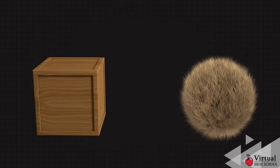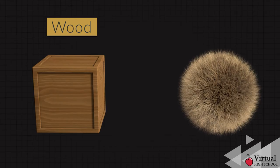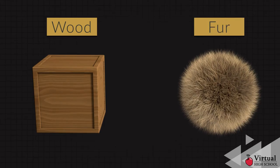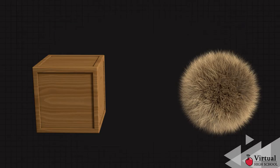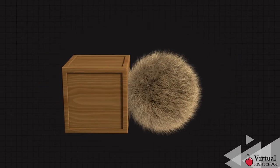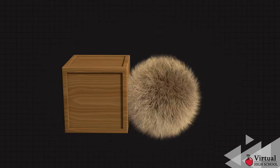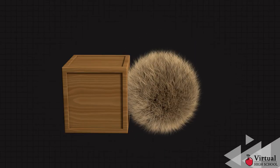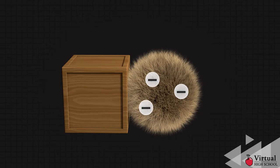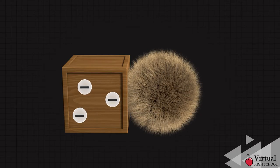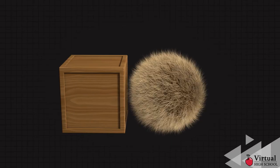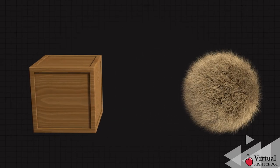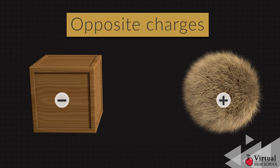Consider two objects made of different materials. As a result, one has a stronger hold on its electrons than the other. If these two objects are rubbed together, the object with the weaker hold on its electrons will give some of its electrons away to the object with the stronger hold. In the end, we are left with two objects that have opposite charges.